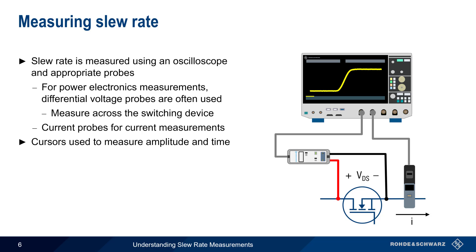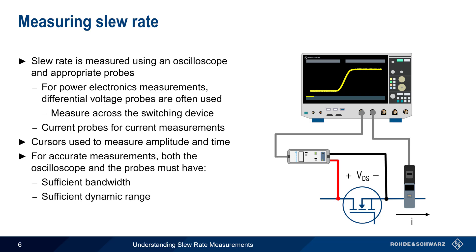Although slew rate measurements are very straightforward, accurate results require that both the oscilloscope and the probes have sufficient bandwidth to measure high slew rate signals, as well as sufficient dynamic range to measure both the low and high levels.